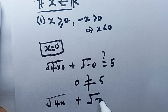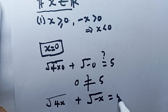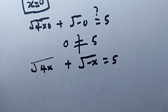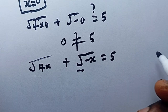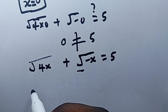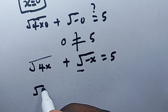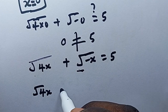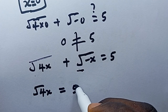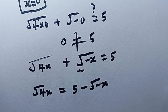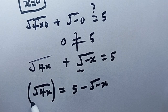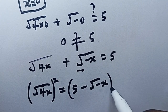Let me rewrite this: root(4x) minus root(x) equals 5. The next thing I want to do is move the radical term to the right-hand side, so that root(4x) equals 5 minus root(-x). Then we square both sides to remove the radicals.